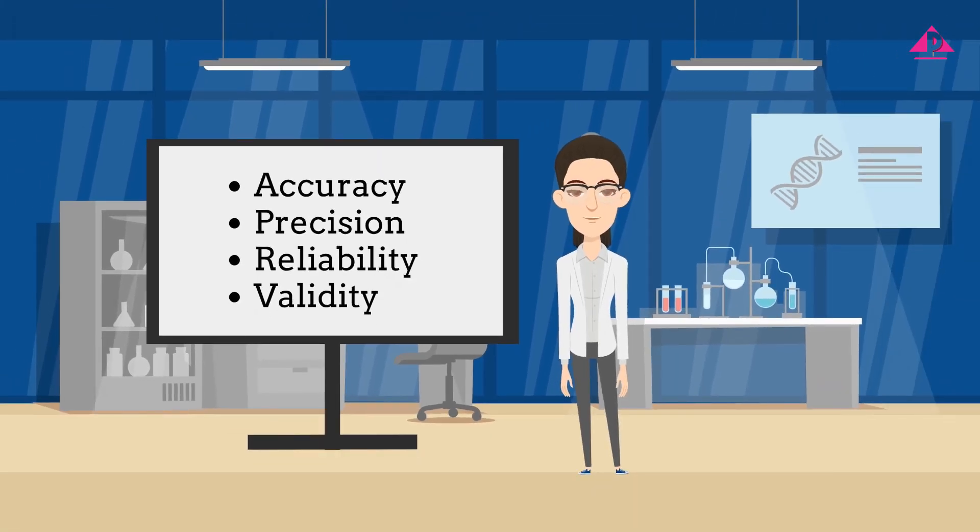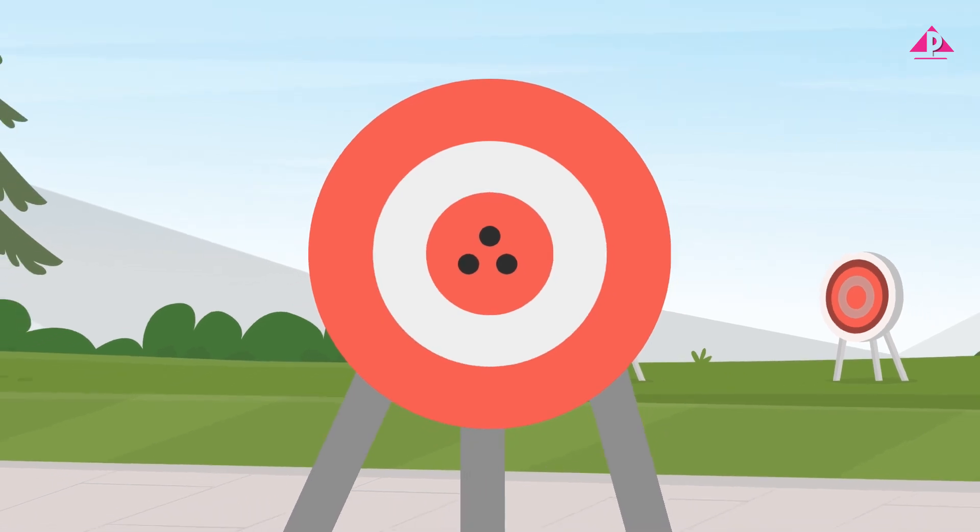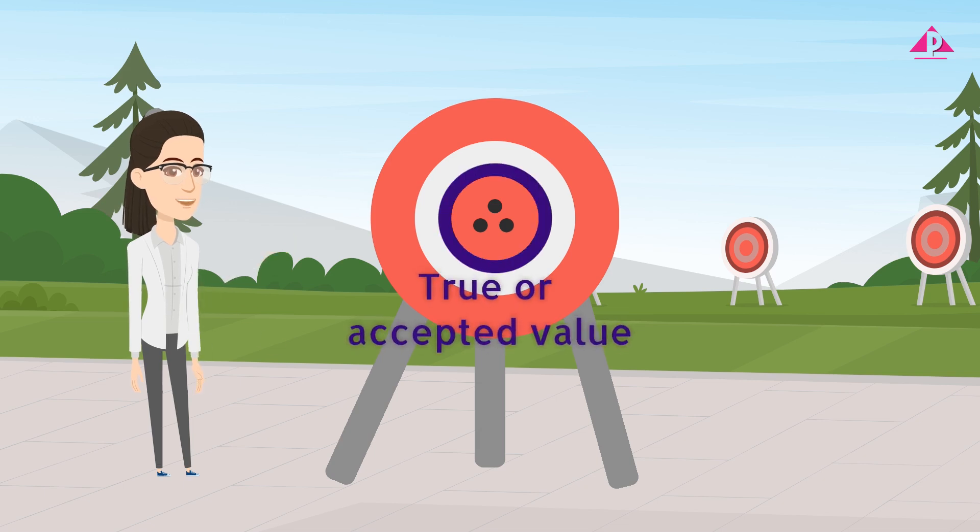They might sound a bit complicated at first, but don't worry, I'll keep it simple. First up is accuracy. Picture yourself throwing darts at a dartboard. Accuracy is about how close you get to the bullseye, the target. In science, accuracy is just like that. It's how close your measurement is to the true or accepted value.